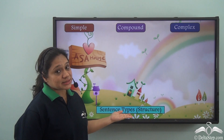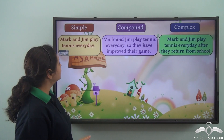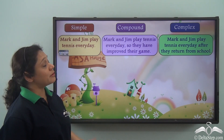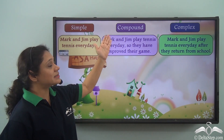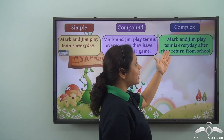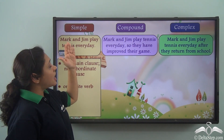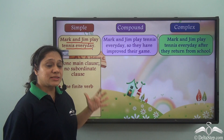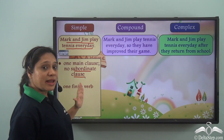Sentences are of three kinds based on structure: the simple sentence, the compound sentence, and the complex sentence. For example, 'Mark and Jim play tennis every day' is a simple sentence. A simple sentence has one main clause and no subordinate clause, and it has one finite verb — 'play.'